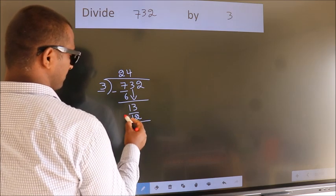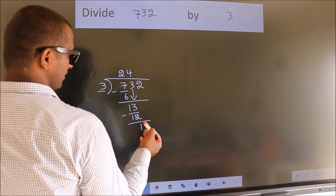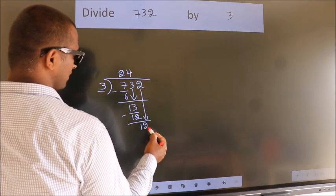Now we subtract. We get 1. After this, bring down the beside number. So 2 down. So 12.